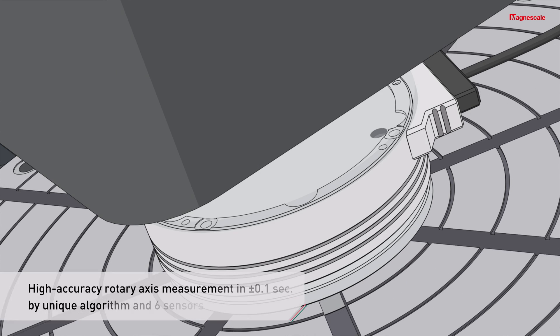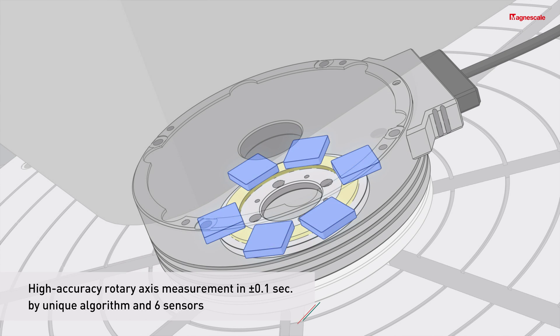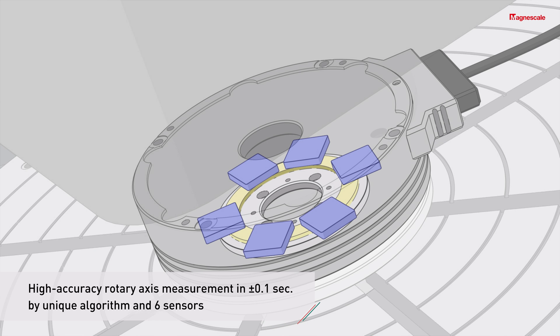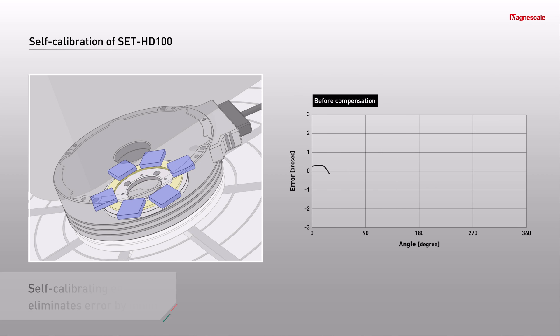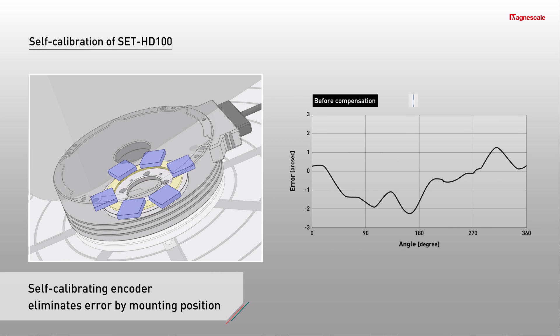Set HD100 uses 6 sensors and unique algorithms for self-calibration, to compensate angular errors for the entire circumference within ±0.1 seconds. And this accuracy is traceable in accordance to Japanese Measurement Standards JCSS.